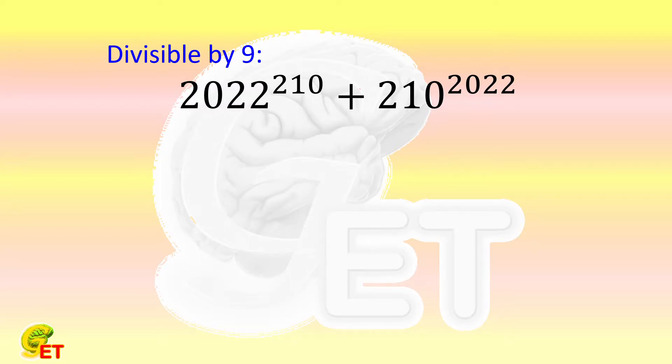Look at the first term. We naturally ask whether 2022 is divisible by 9. The answer is no, but it is indeed divisible by 3. 2022 is in fact equal to 3 times 674.